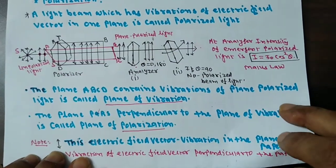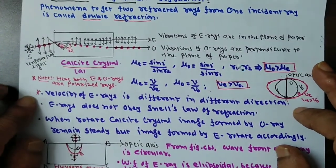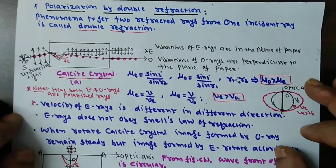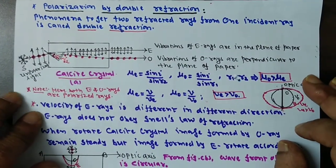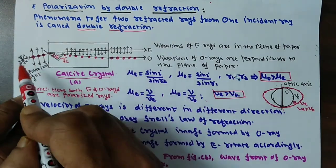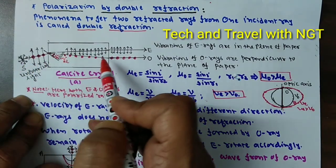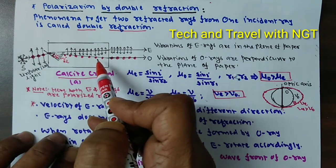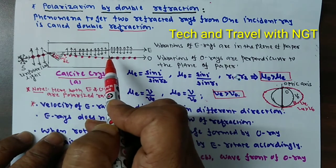Now, let me explain polarization by double refraction. What do we mean by double refraction? You can get two refracted rays from one incident ray. This phenomenon is called double refraction.